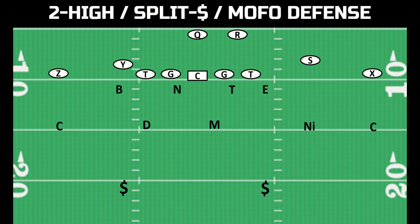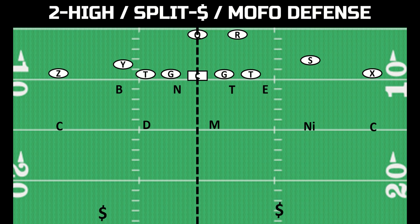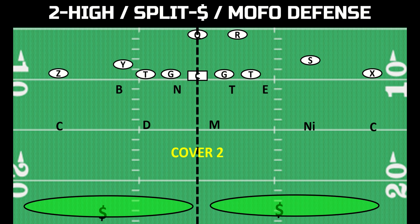In the two high world — the middle of the field open world — you have two primary different types of coverages. The first thing to understand is that after the snap, the defense is splitting the field in half, hence why it's called split safety. The first coverage is called cover two. This is when there are essentially two deep zones. It doesn't always play out exactly like this, but think of cover two as two deep zones. You can look at the specifics of the cover two tools in the dedicated video.